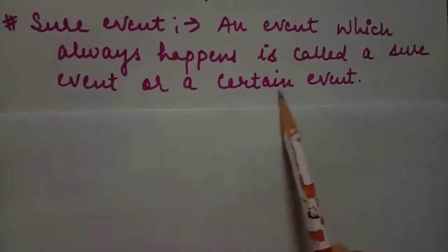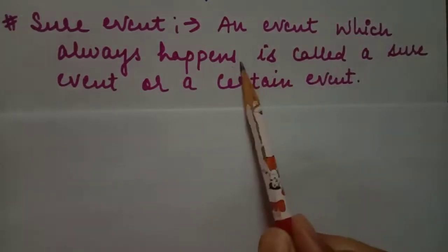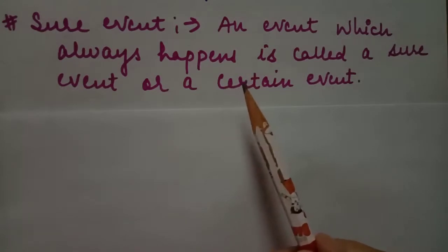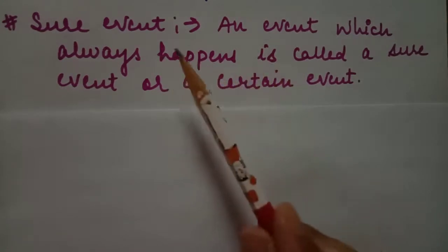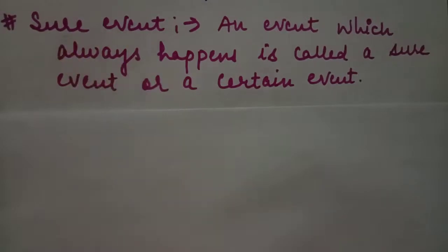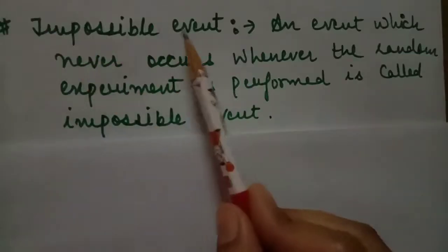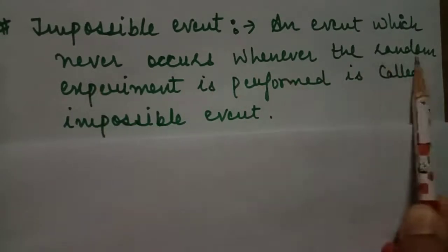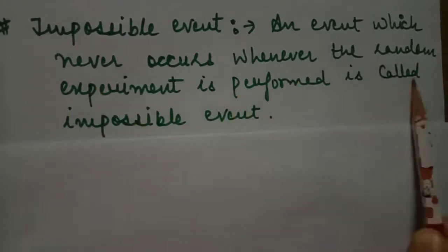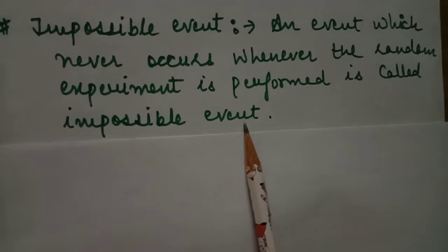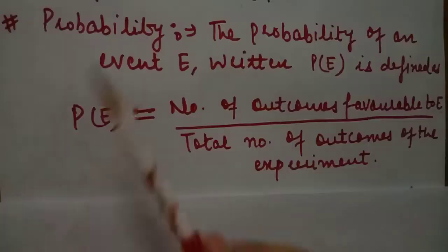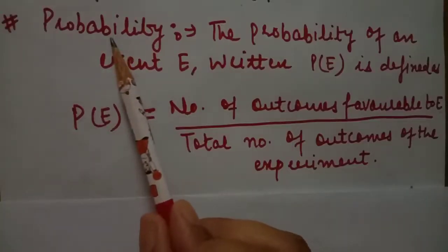A sure event, or certain event, is an event which always happens — its occurrence is fixed and cannot be cancelled. An impossible event is an event which never occurs whenever the random experiment is performed.